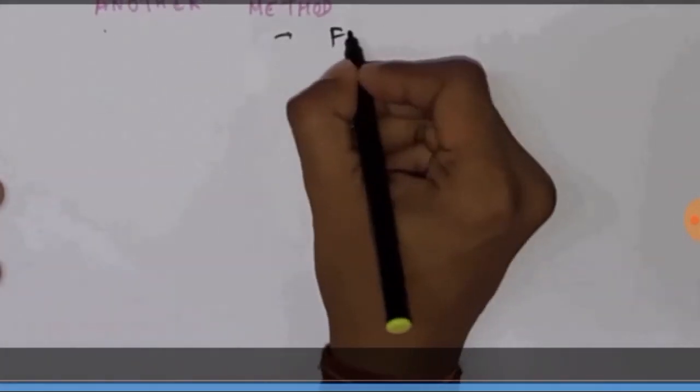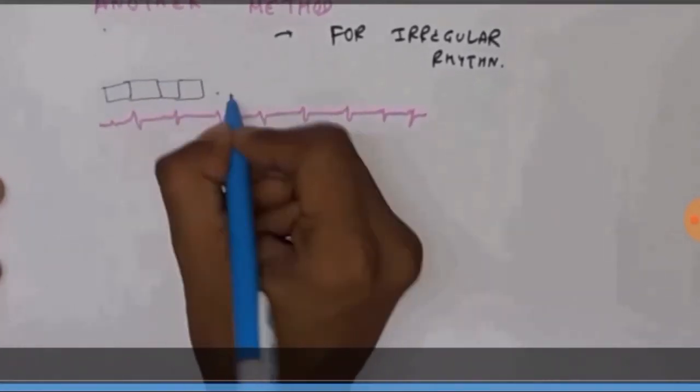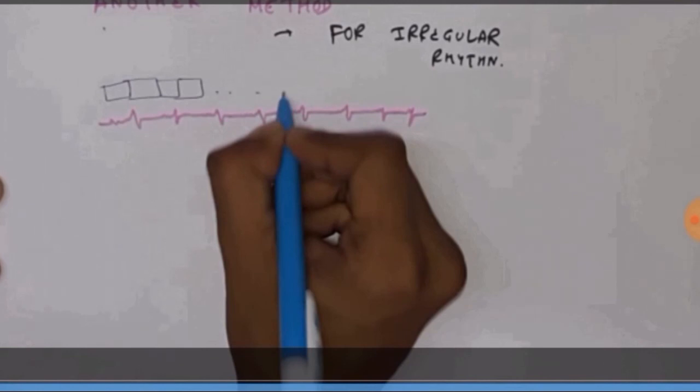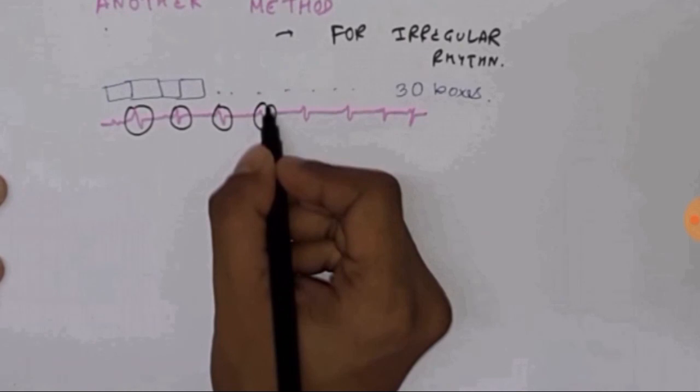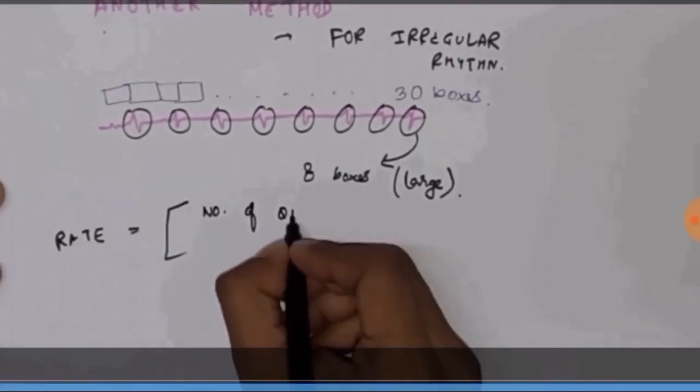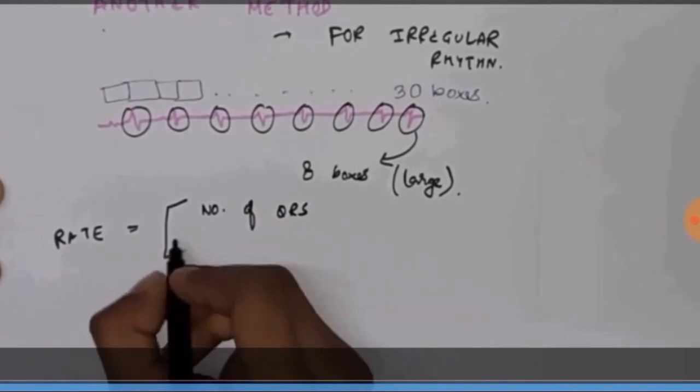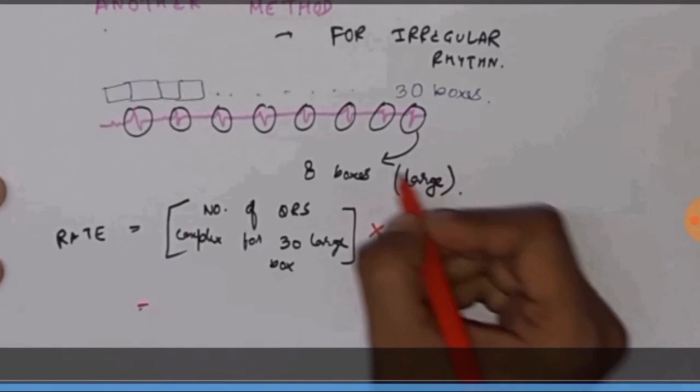This is another method to determine the rate if it is irregular rhythm. Here we take the ECG tracing, and like in the previous video, we have taken for 10 second recordings, but here we're going to take the ECG recording for how much? For 30 large boxes, mind you, not small boxes. The large boxes that accommodate about 5 small boxes. We're going to count the 30 large boxes, and as same as before, we're going to count the number of QRS complexes. Here, it is 8 large boxes. Our formula is rate equals to number of QRS complexes for 30 large boxes multiplied by 10. Did you see that? 10?